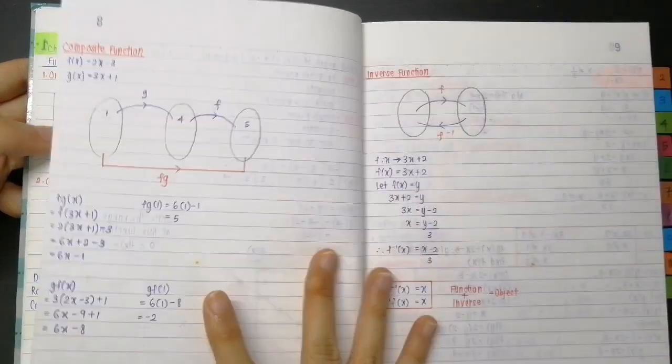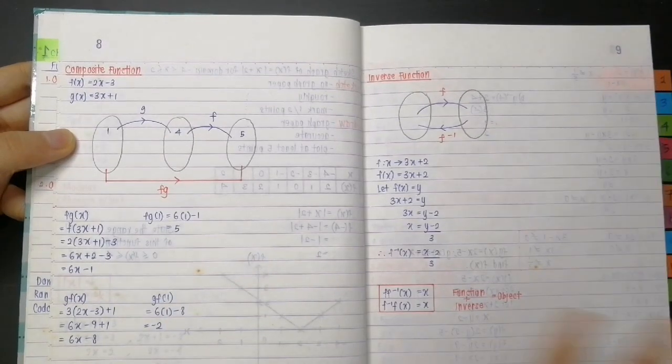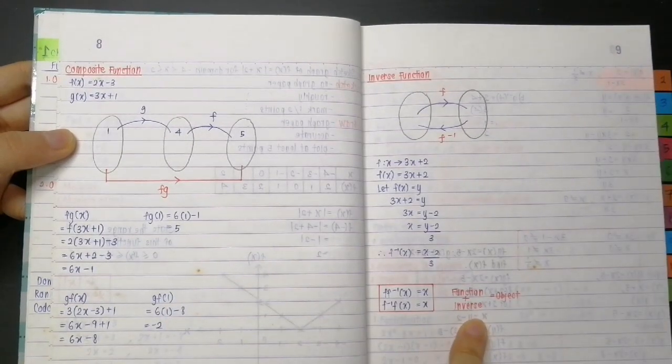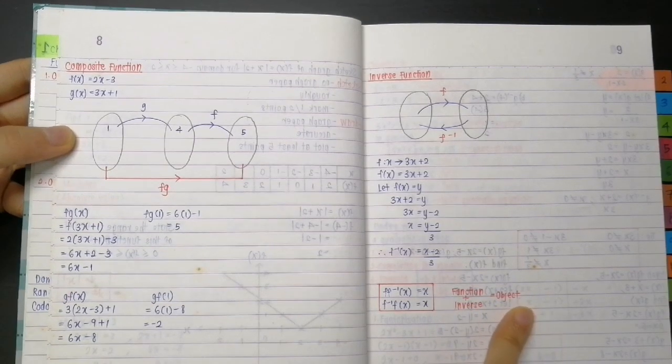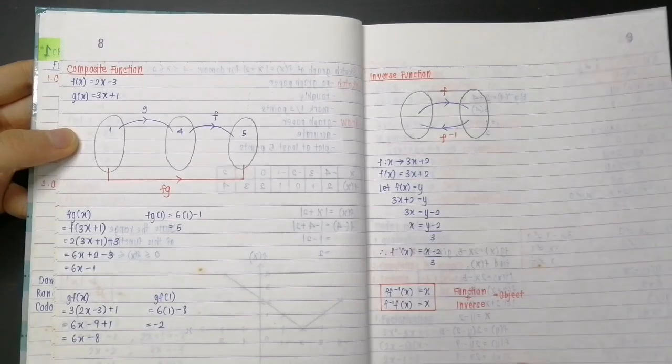So we have everything, and I also wrote little notes to myself like 'function plus inverse will become object,' and I use diagrams as well to make myself understand.